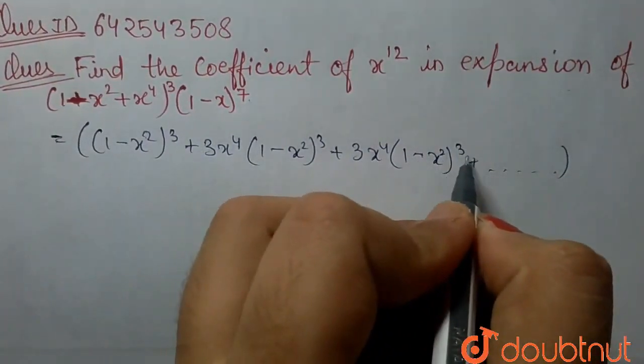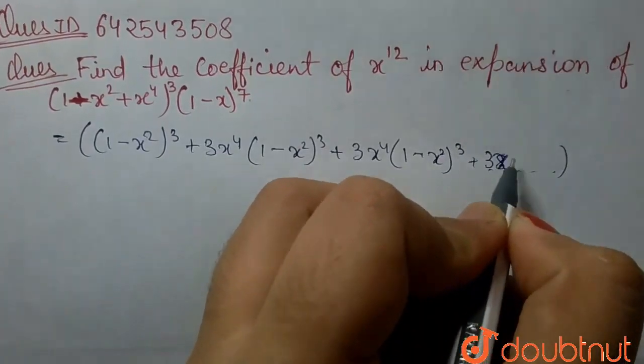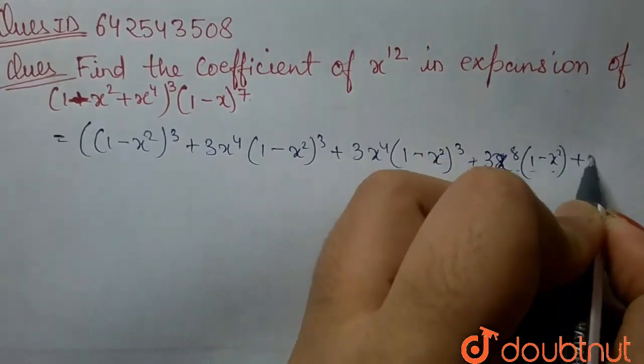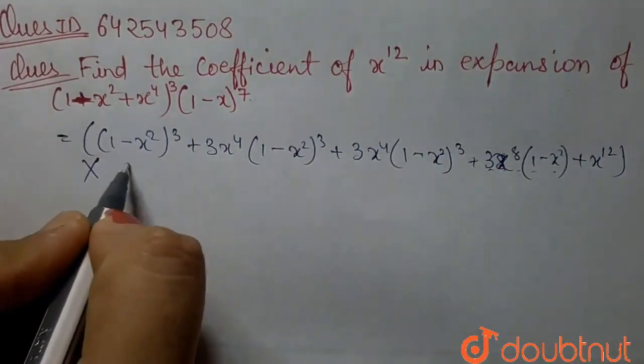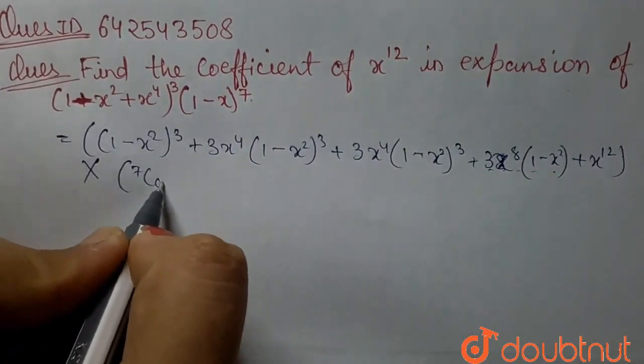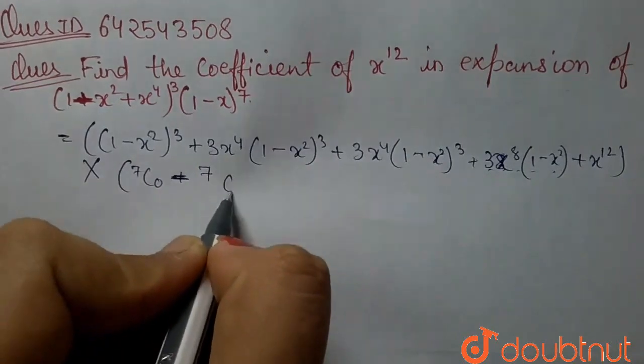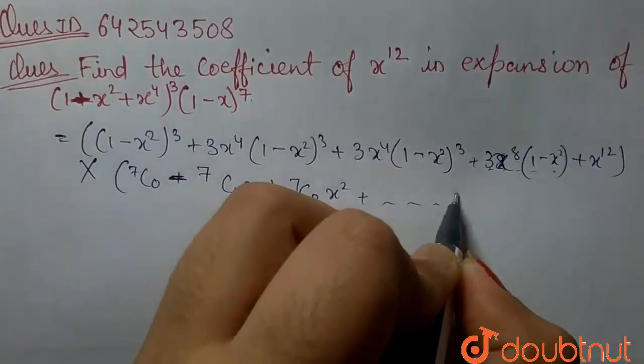x to the power 3 plus 3 x to the power 8 times 1 minus x square plus x to the power 12 times 1 minus x to the power 7, which equals 7 c 1 x plus 7 c 2 x square and so on.